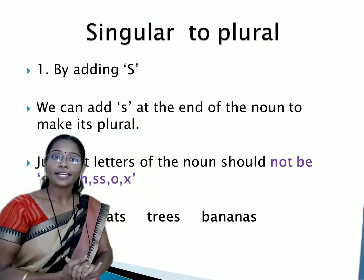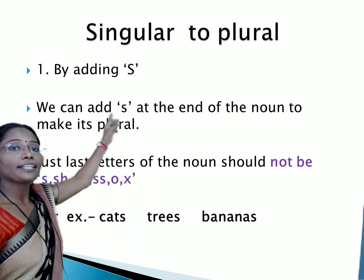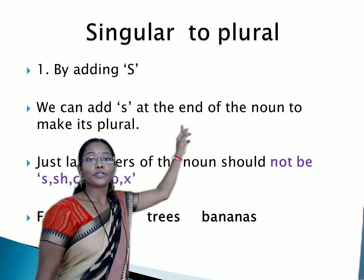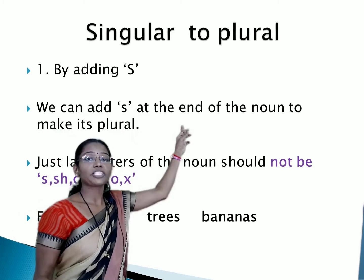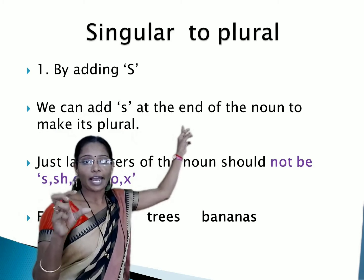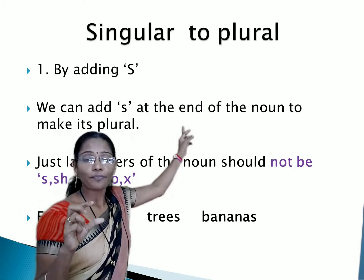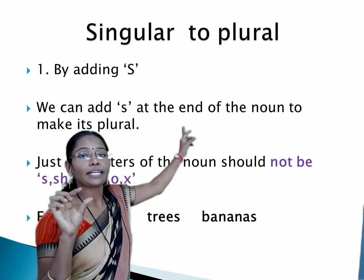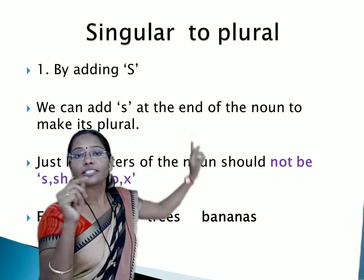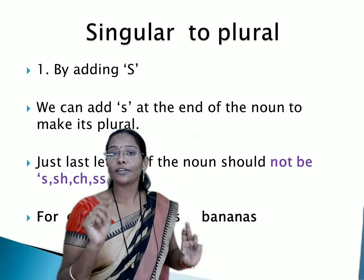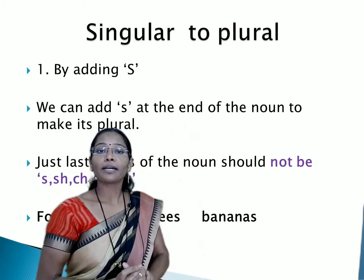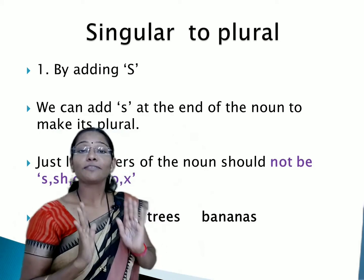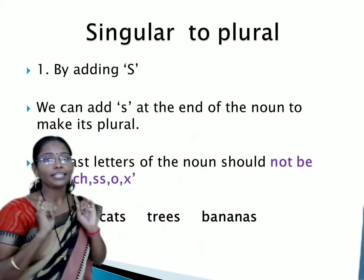But where to add this S? We can add S at the end of the noun to make its plural. Whichever noun we have, to make its plural, we should write the complete spelling of that noun and just add S at the end. So it will become plural. But while adding S, we need to take care of one thing.